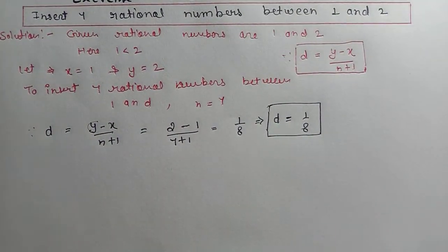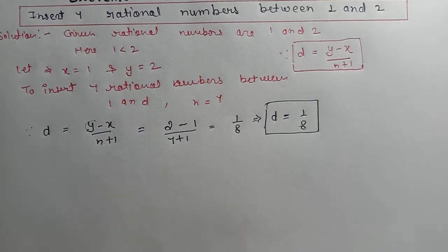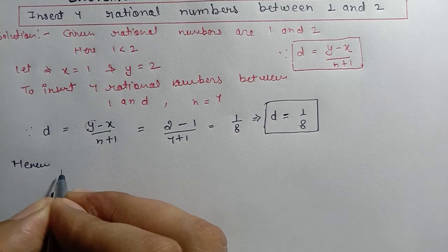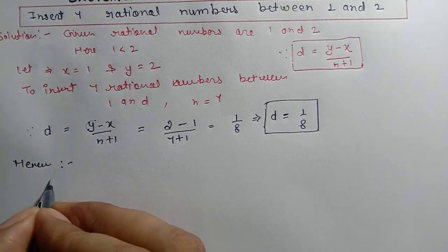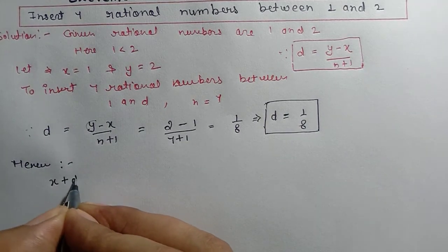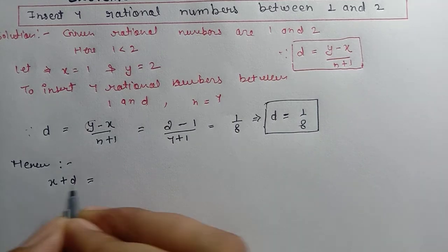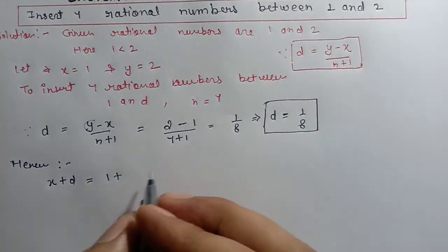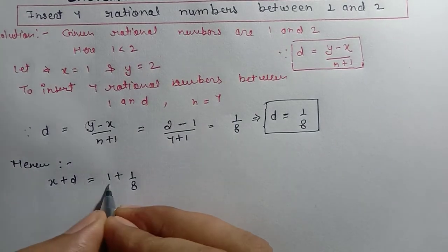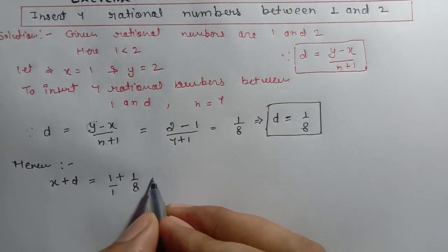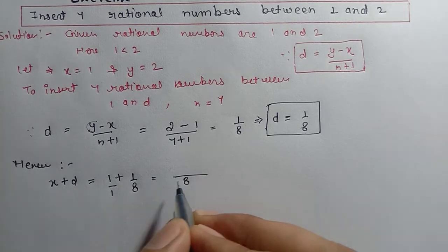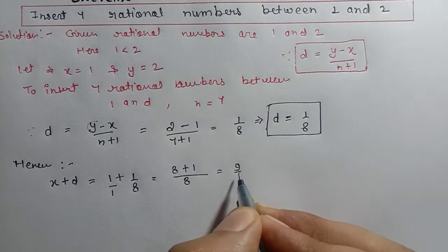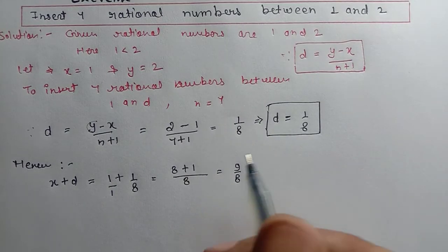If d is 1 by 8, it is easy. We need 7 rational numbers. Hence, x plus d is your first rational number. So, x value is 1 and d is 1 by 8. Calculate it: 8 plus 1, this is 9 by 8.